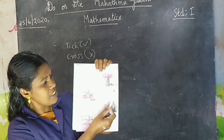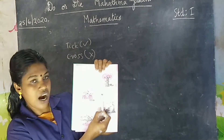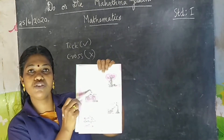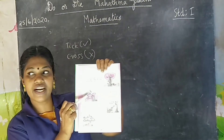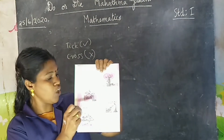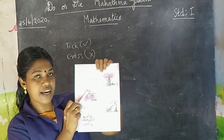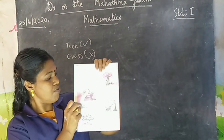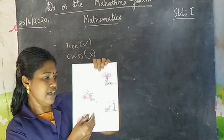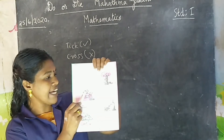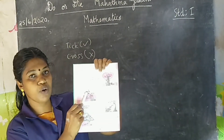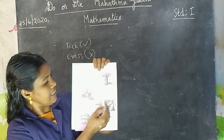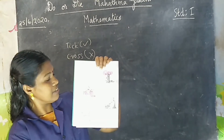Take the objects on the top of the house. Which one is at the top of this house? Flag or car? Flag is on the top of this house. Therefore, take the flag.